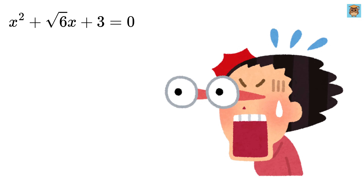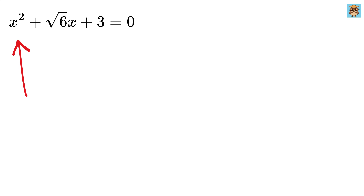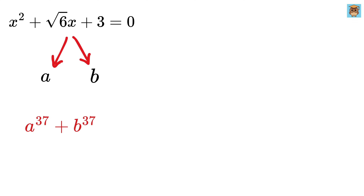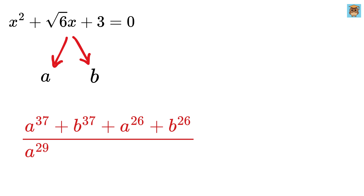I never thought that a question on even a quadratic equation can be this tricky. We have a quadratic equation x squared plus the square root of 6 times x plus 3 equals 0, whose roots are a and b. We are asked to find the value of a raised to 37 plus b raised to 37, plus a raised to 26 plus b raised to 26, divided by a raised to 29 plus b raised to 29, plus a raised to the 18th power plus b raised to the 18th power.